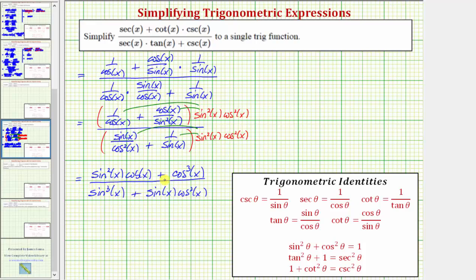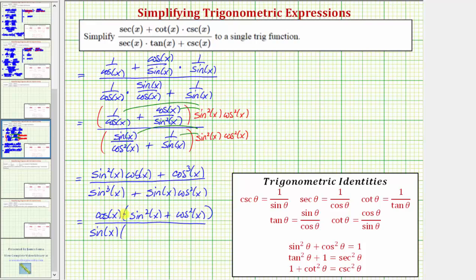And now from here, let's factor the numerator and denominator. Looking at the numerator, these two terms share a common factor of cosine x, so we'll factor out cosine x, which will leave us with sine squared x plus cosine squared x. Looking at the bottom, there's a common factor of sine x, so we'd have sine x times the quantity sine squared x plus cosine squared x.